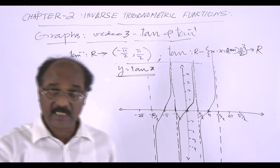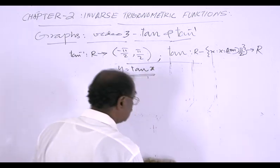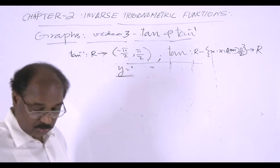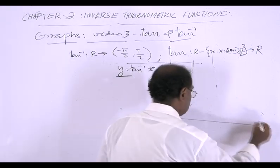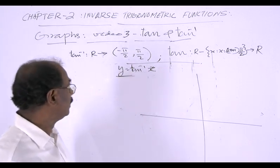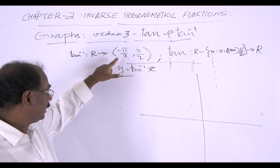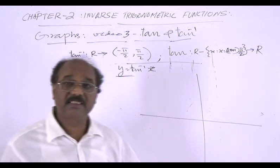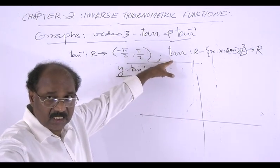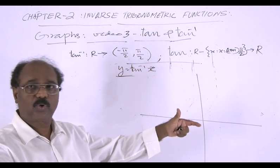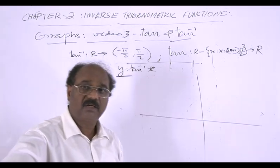Now consider the graph of y = tan⁻¹(x), the inverse tangent function. The tan inverse function is defined from ℝ into the interval (−π/2, +π/2). This is one branch — the principal branch of tan(x). We use this principal branch to draw the graph of tan inverse.